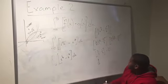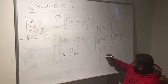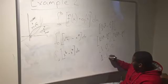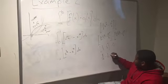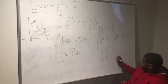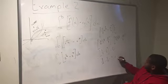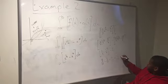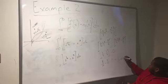Finally, you subtract 8 twelfths minus 3 twelfths to get a final answer of 5 twelfths unit squared, which would be the area between the curves of the square root of x minus x cubed.